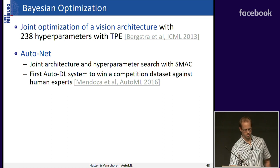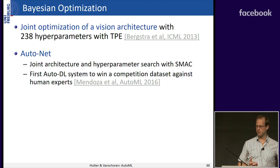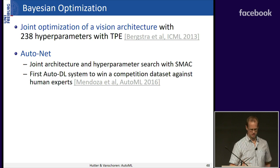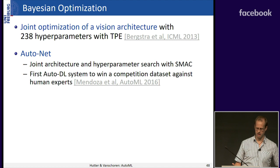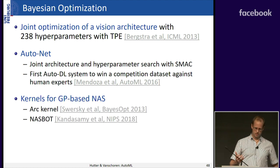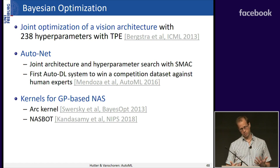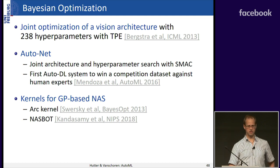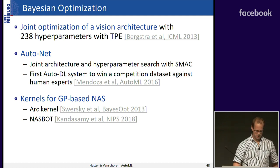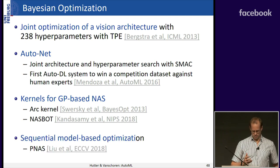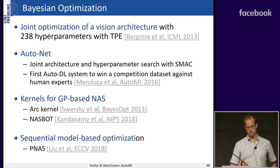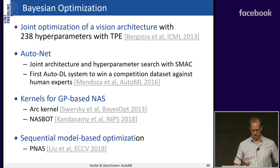Back in 2013, James Bergstra did joint optimization of a computer vision pipeline with 238 hyperparameters using TPE. In 2016, AutoNet was the first AutoDL system to win a competition dataset against human experts. Bayesian optimization with Gaussian processes is harder to use for NAS because you need the right kernel, but there are kernels designed for this — the Arc kernel from 2013 and the NASBOT kernel from 2018. Sequential model-based optimization using a surrogate model to pick the next architecture to evaluate has also yielded state-of-the-art results compared to reinforcement learning.